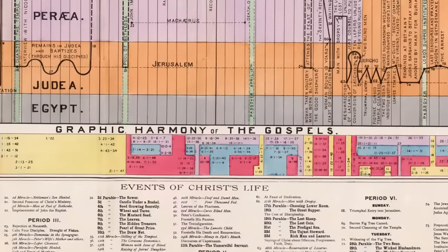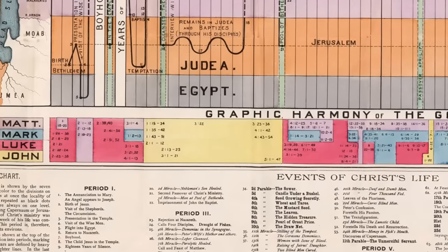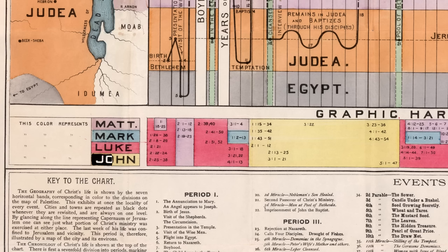Underneath the main chart is a section called Graphic Harmony of the Gospels. As you probably know, the New Testament contains four Gospels, each of which gives an account of the life of Jesus. The first three — Matthew, Mark, and Luke — are called the Synoptic Gospels. Synoptic meaning 'same eye' because they all basically give the same version of events with some minor differences. In contrast, the Gospel of John is very different. It includes lots of material that is not found in the other three and leaves out lots of other material that is.